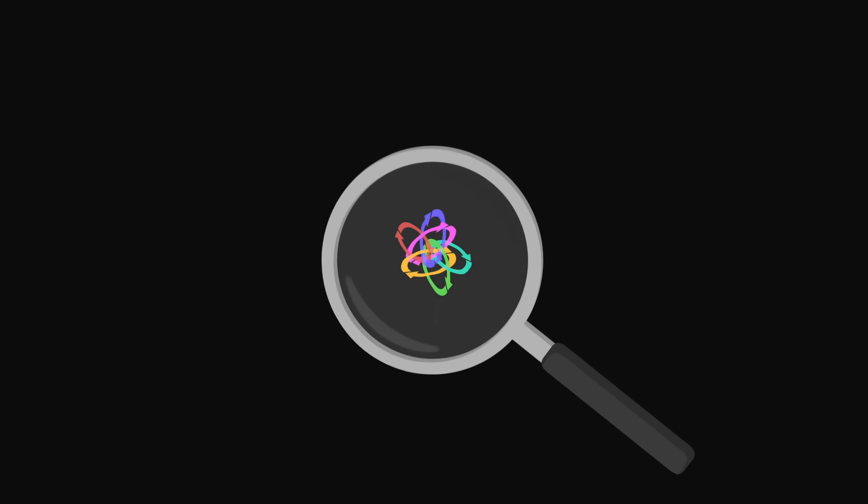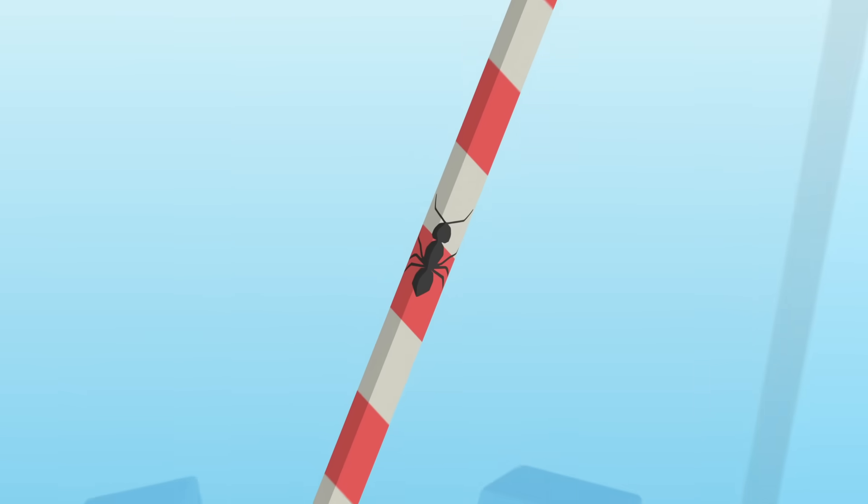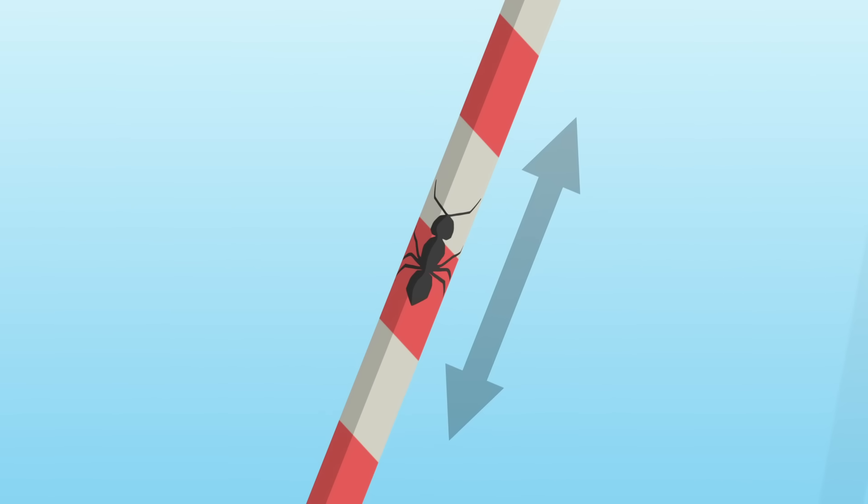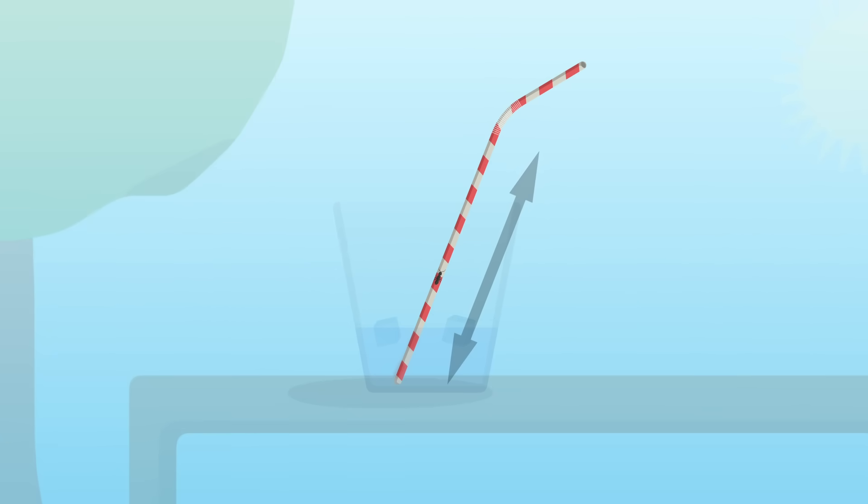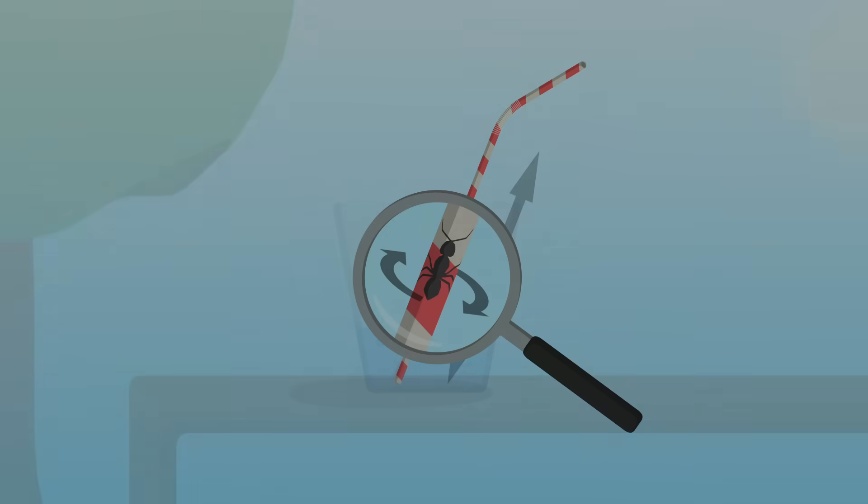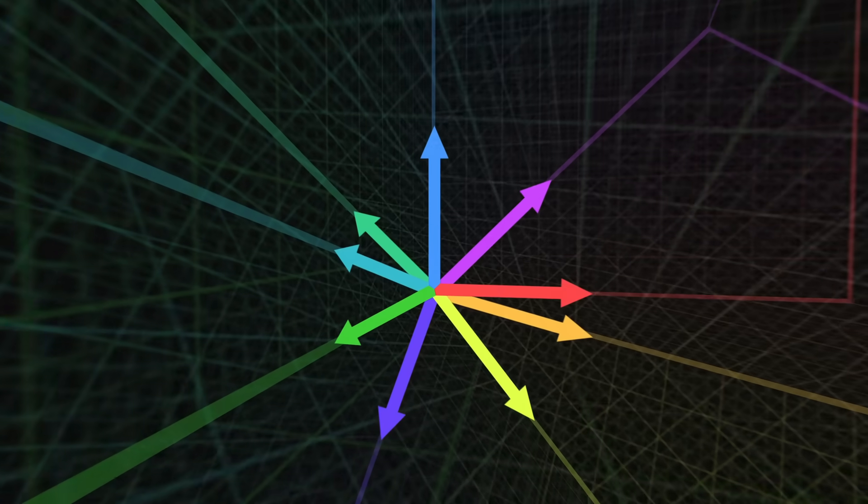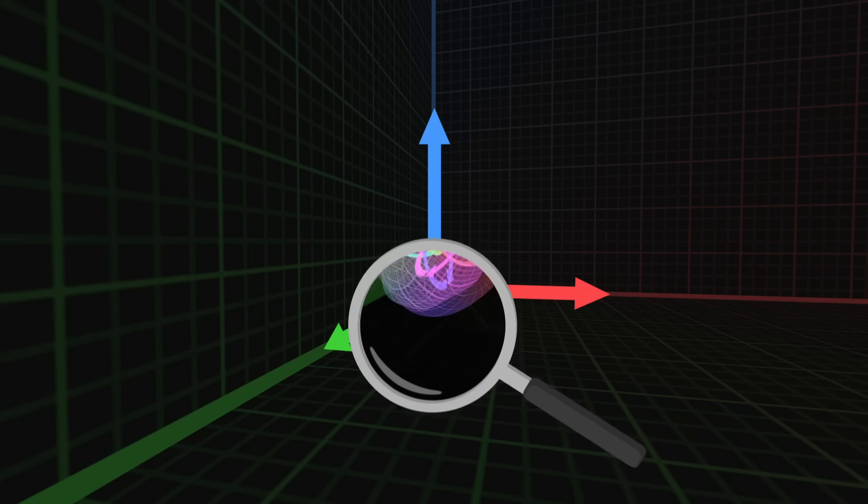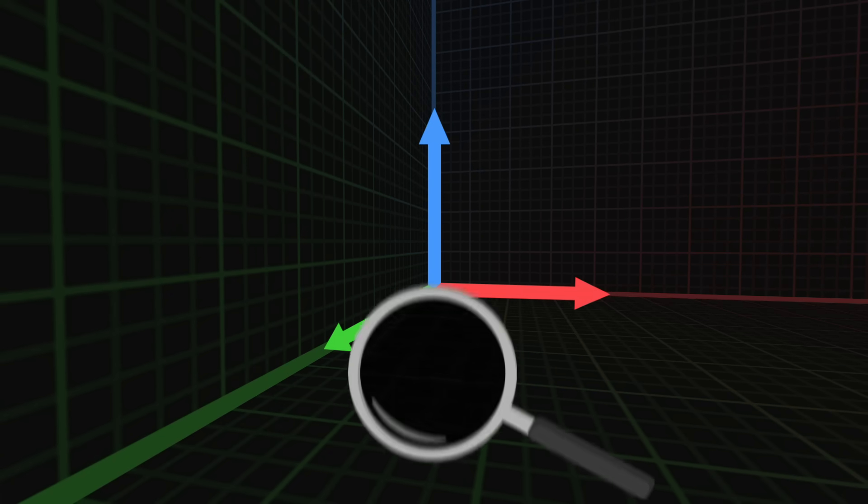Another possibility could be that the six dimensions that we do not observe are curled up on themselves. To understand, let's imagine an ant walking on a straw. The straw has two dimensions. The ant can walk back and forth, and left to right around the circumference of the straw. But if we zoom out enough, we only notice one of the two dimensions. The second one that curls around the straw is very small and cannot be seen on this scale. In string theory, we can assume a similar phenomenon. Our universe would have nine dimensions of space, but six of them would be very small dimensions curled up on themselves, so that we do not see them on our scale.